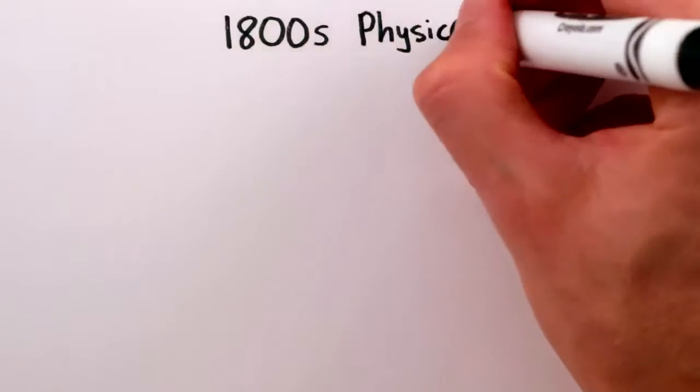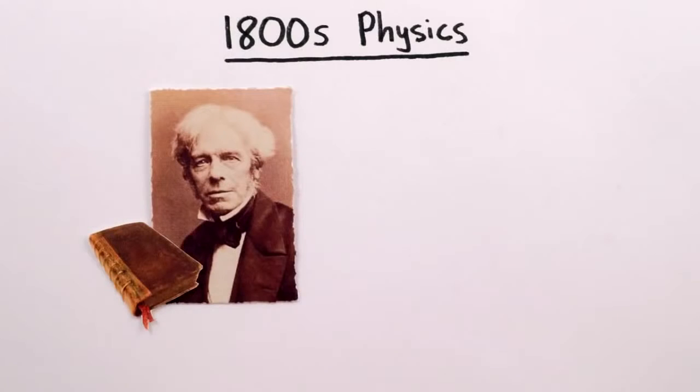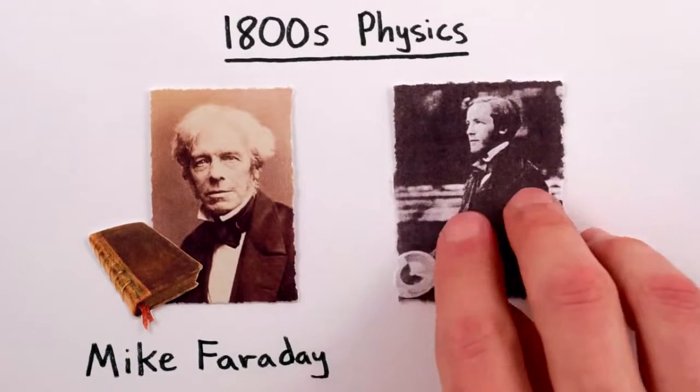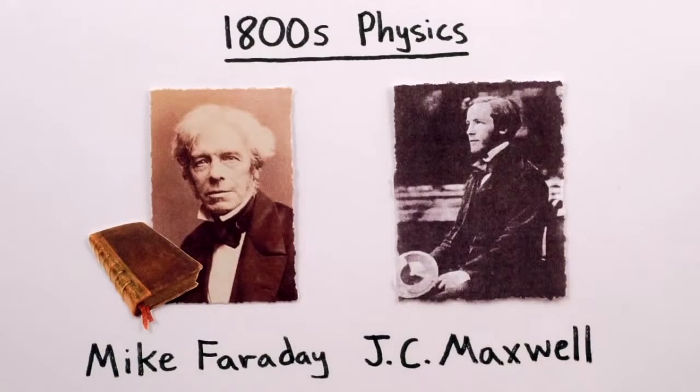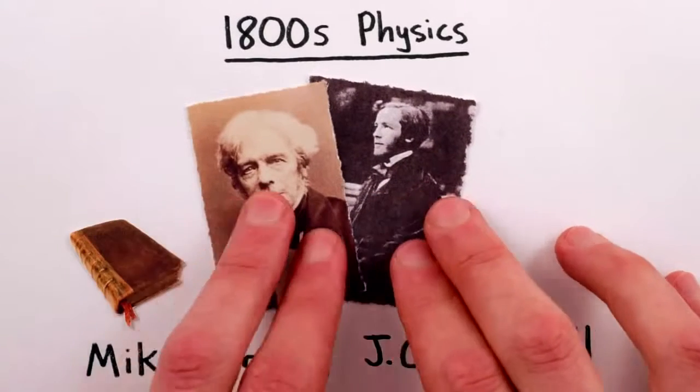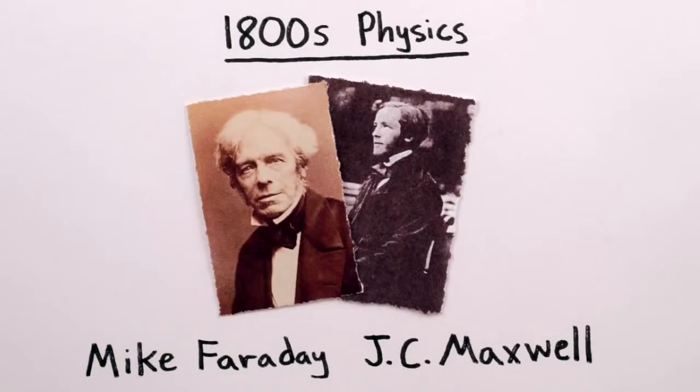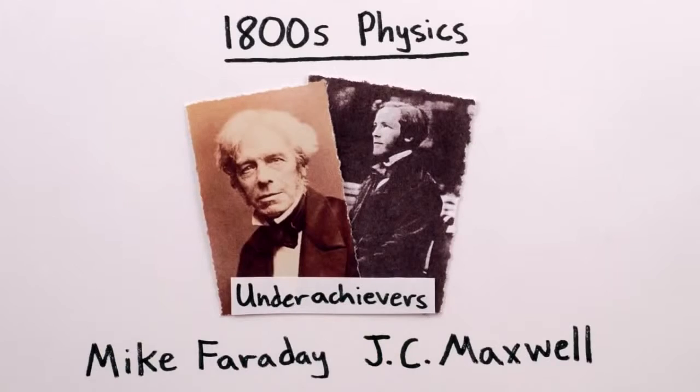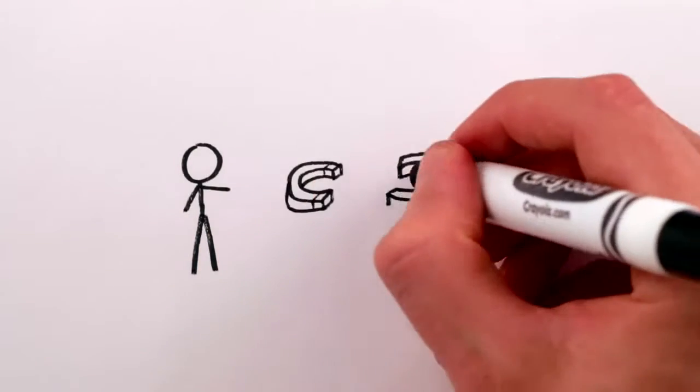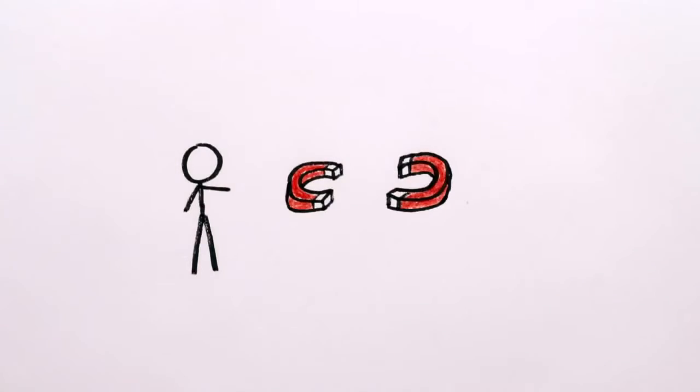But into the world of physics came a London bookbinder's apprentice named Michael Faraday and a young Scottish laird named James Clark Maxwell. Together, Magnetic Mike and JC made one of the greatest discoveries of all time. Faraday was convinced by his experiments that magnetic and electric forces were not telekinetic action at a distance.